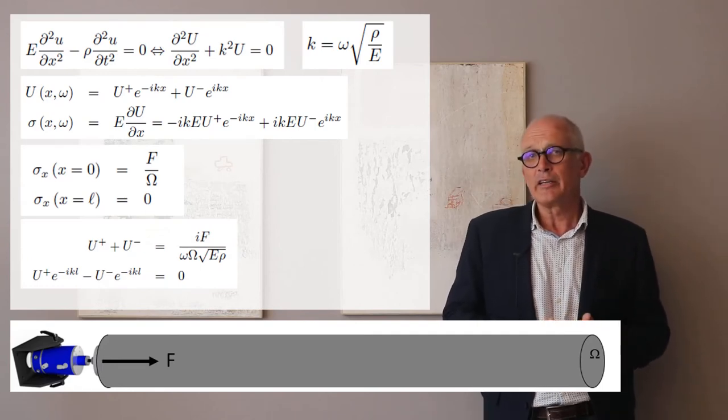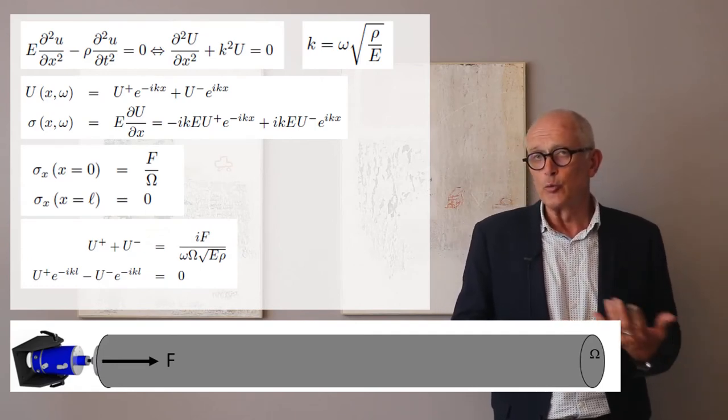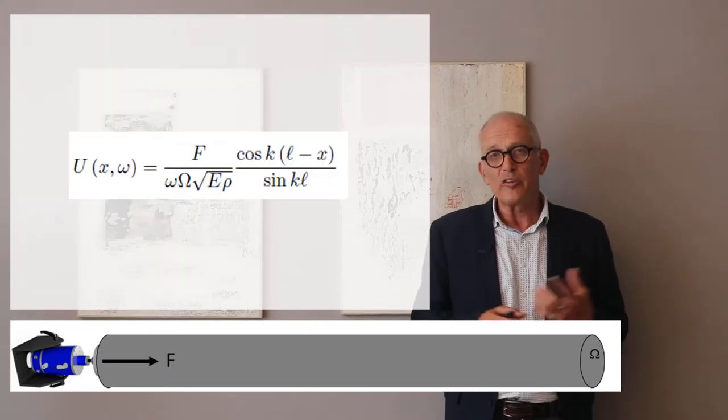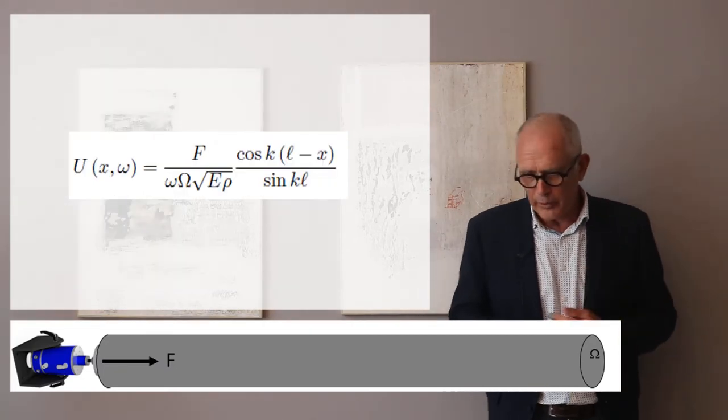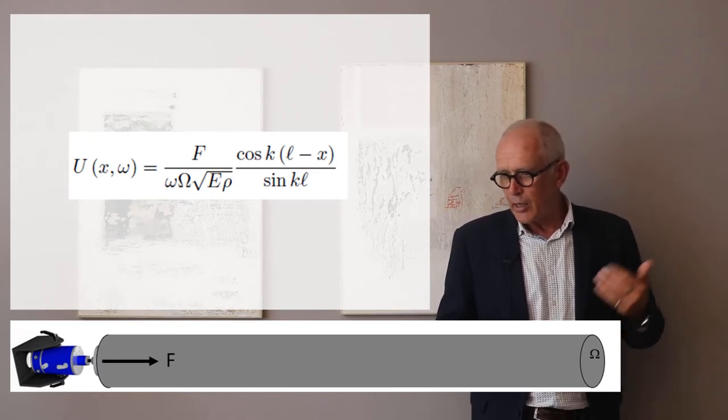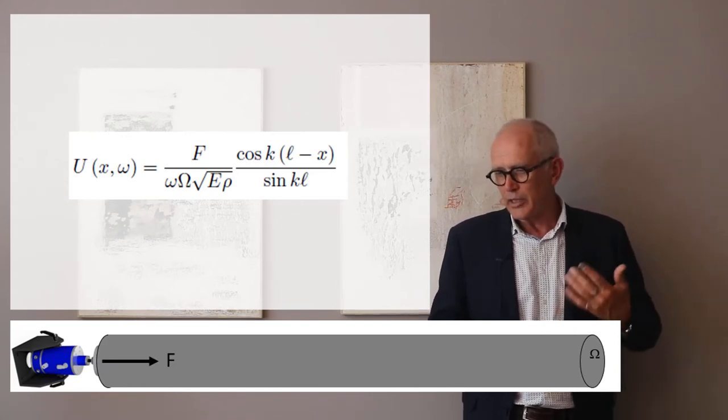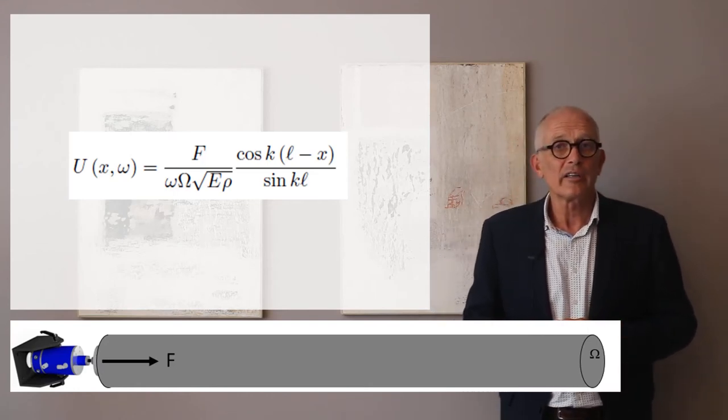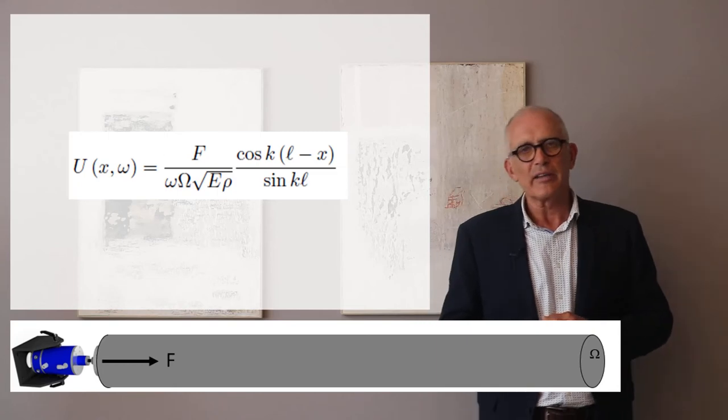This gives us a system of equations for U plus and U minus that we can solve. The displacement of the bar, the spectrum of the displacement, is F divided by omega squared root of E times rho times cosine K(L minus X) divided by sine KL.